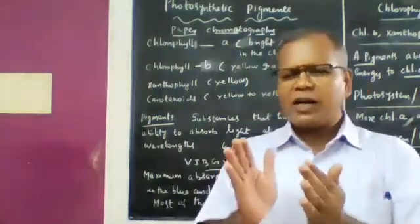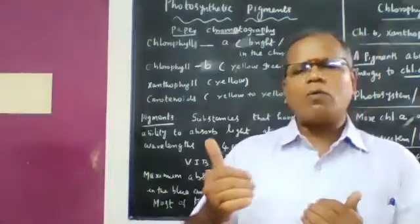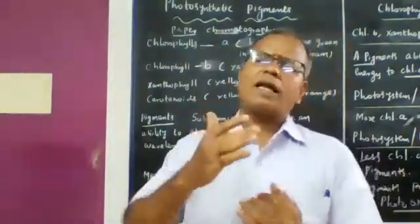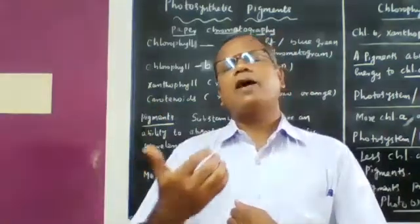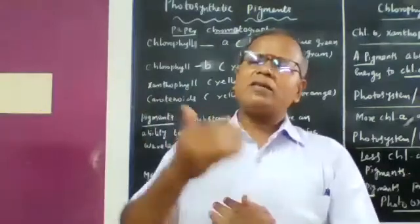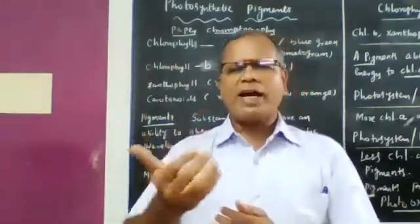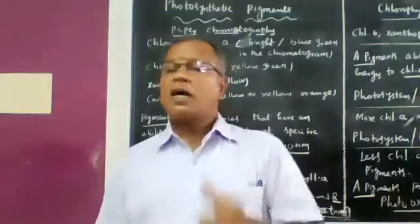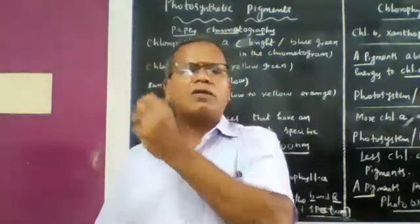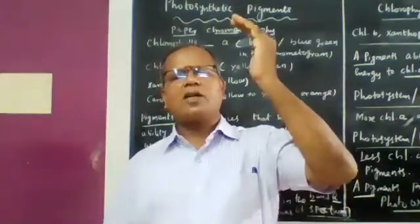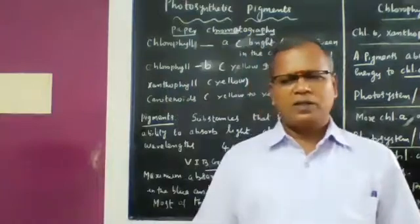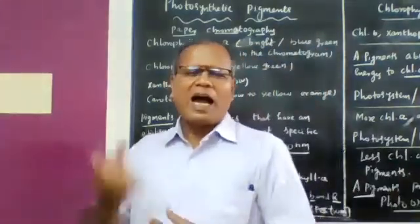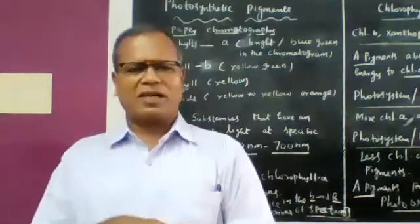There is a reaction between carbon dioxide and water — oxidation of water and reduction of carbon dioxide. Removal of hydrogen means oxidation; addition of hydrogen means reduction. So in photosynthesis, oxidation of water and reduction of carbon dioxide take place.